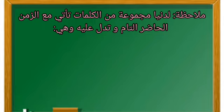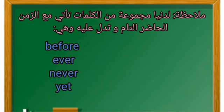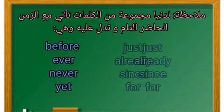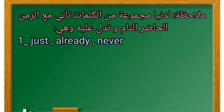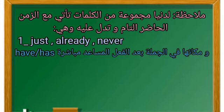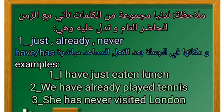ملاحظة: لدينا مجموعة من الكلمات تأتي مع الزمن الحاضر التام وتدل عليه، وهي: before (من قبل)، ever (يومًا)، never (أبدًا)، yet (بعد)، just (تمامًا)، already (مسبقًا)، since (منذ)، for (لمدة). نبدأ بـ just, already, never — مكانها في الجملة بعد الفعل المساعد مباشرةً أي بعد have أو has. مثال: I have just eaten lunch — أنا قد تناولت الغداء للتو.